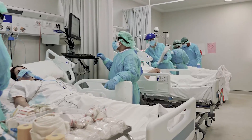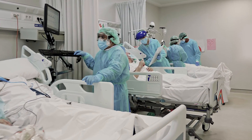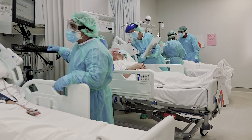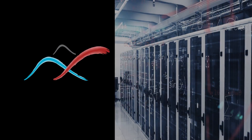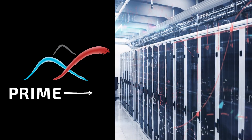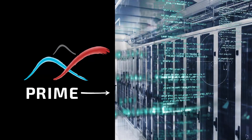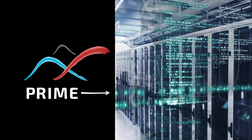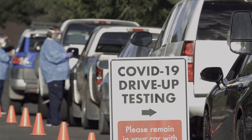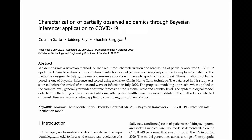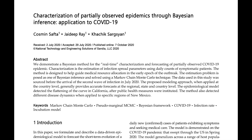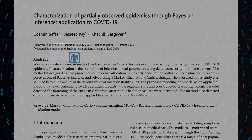When the world encountered a global pandemic in 2020, prediction became possible by combining powerful computers and Bayesian inference. Sandia researchers developed a software package called PRIME to predict the evolution of COVID-19 in the U.S. As the COVID-19 crisis progressed, researchers at Sandia have helped authorities predict how the pandemic might trend, providing a more informed platform for making important decisions.